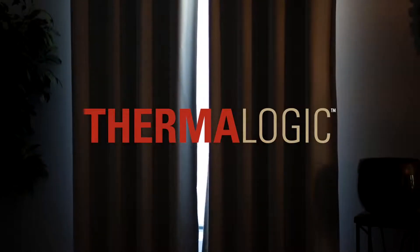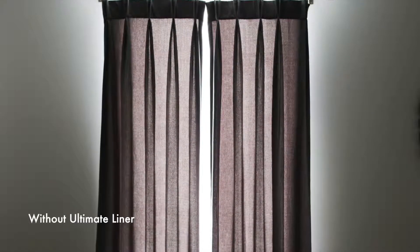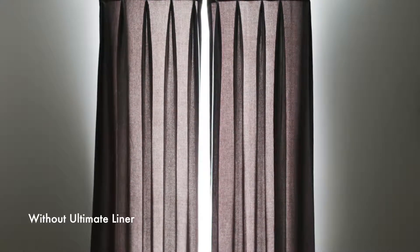Thermologic presents the ultimate solution to offer total darkness to any room. The ultimate liner will be easily installed behind most types of ready-made window panels to offer complete darkness to your room. It will turn any window panel into a complete blackout panel. Here is how it works.